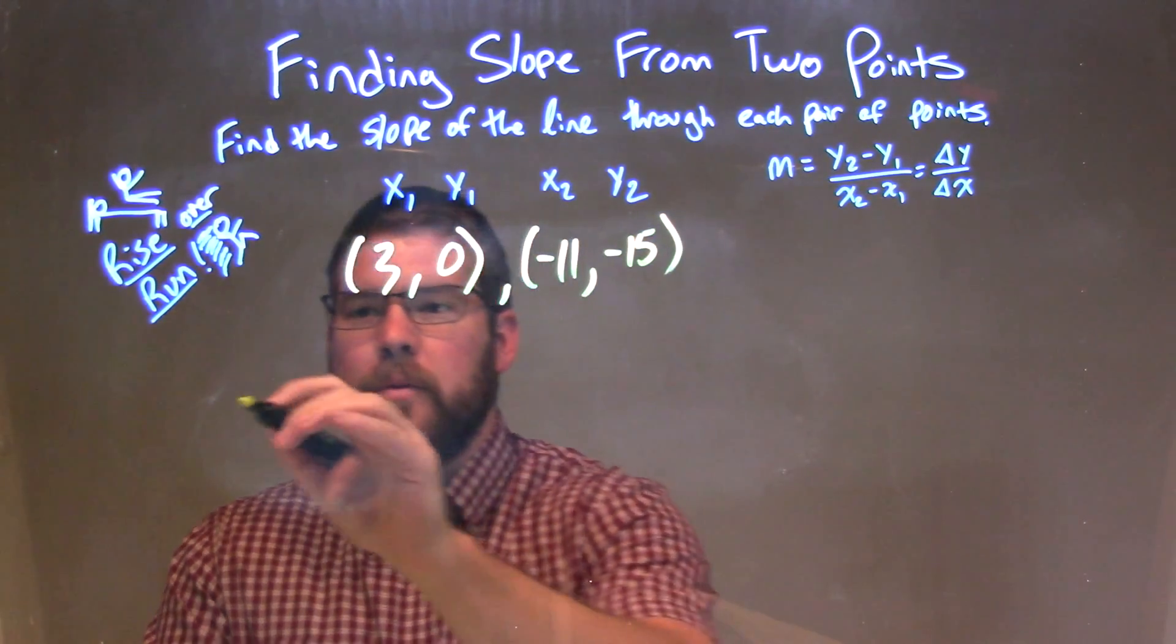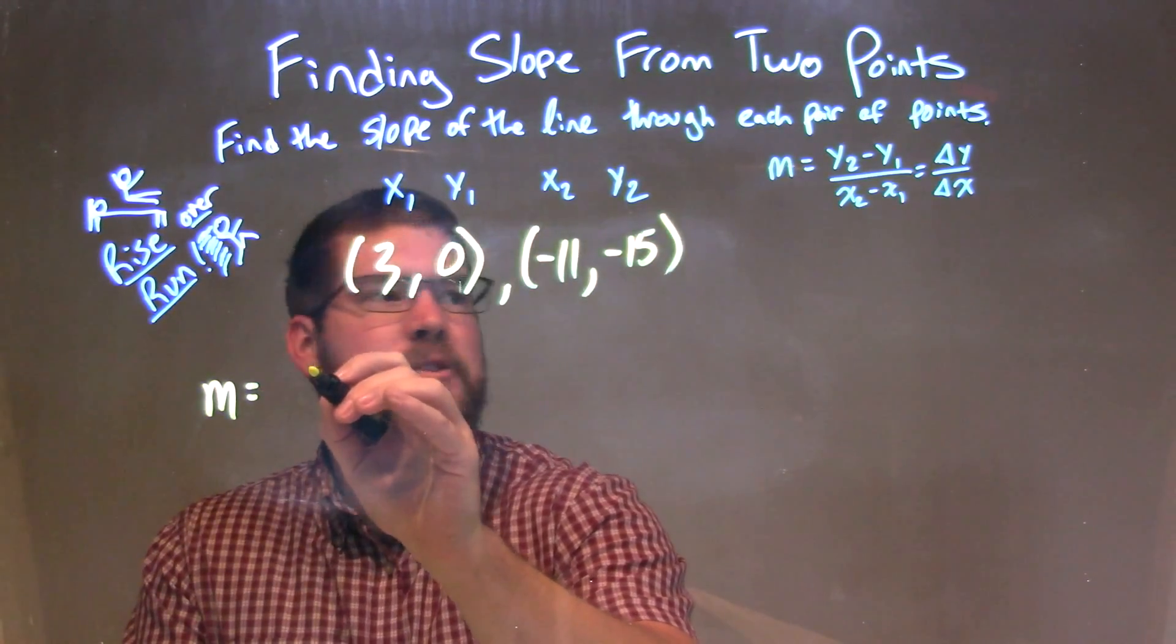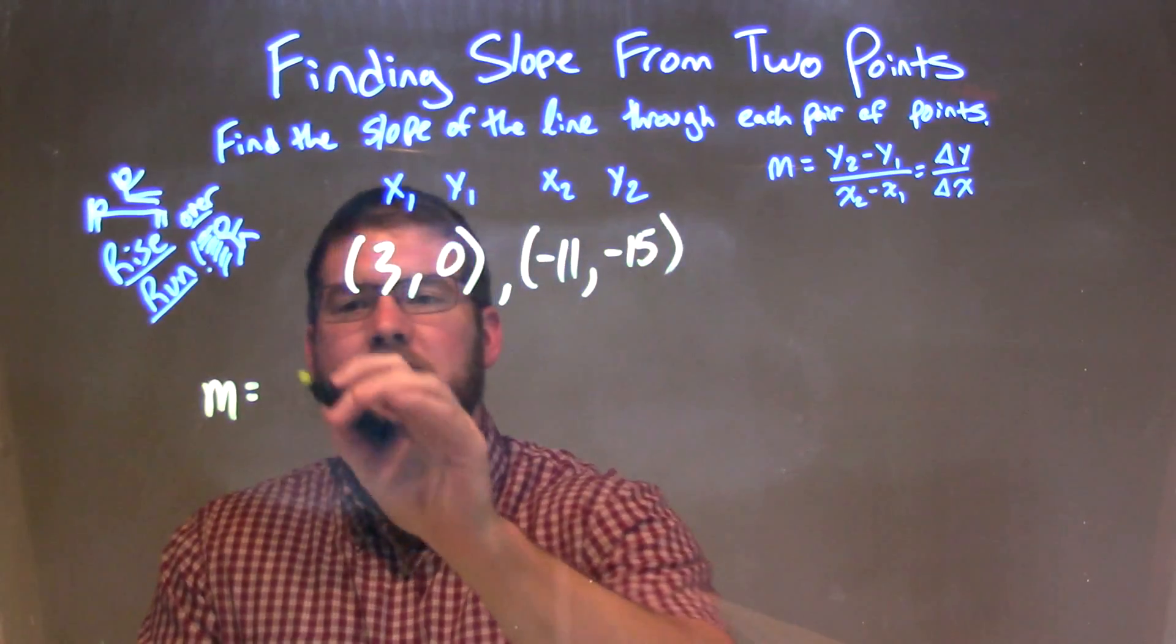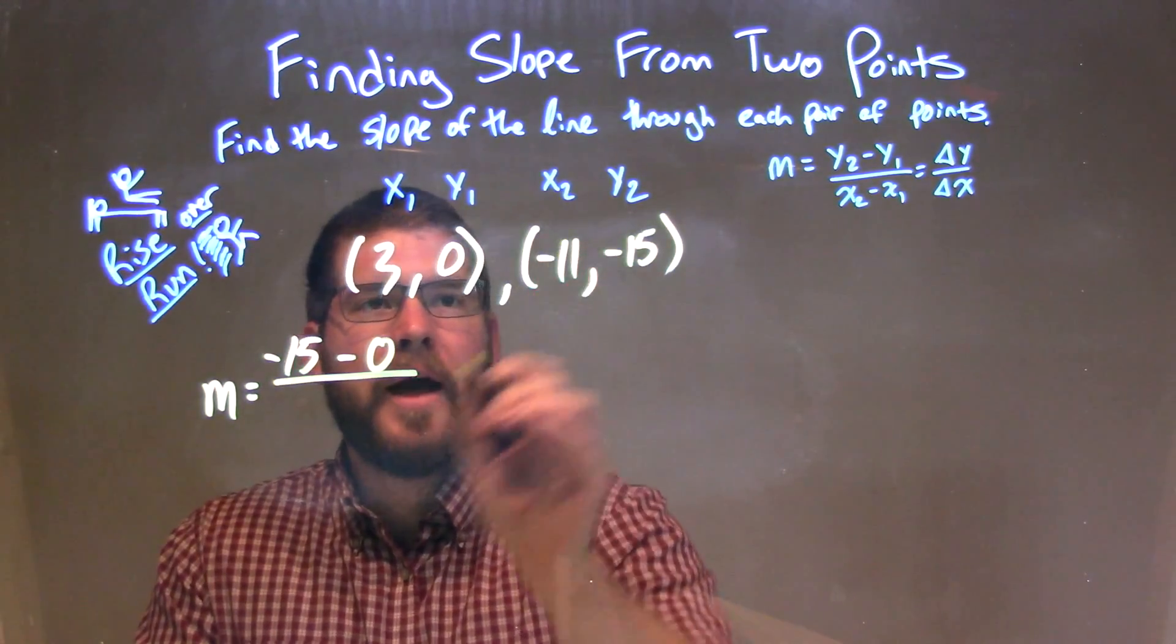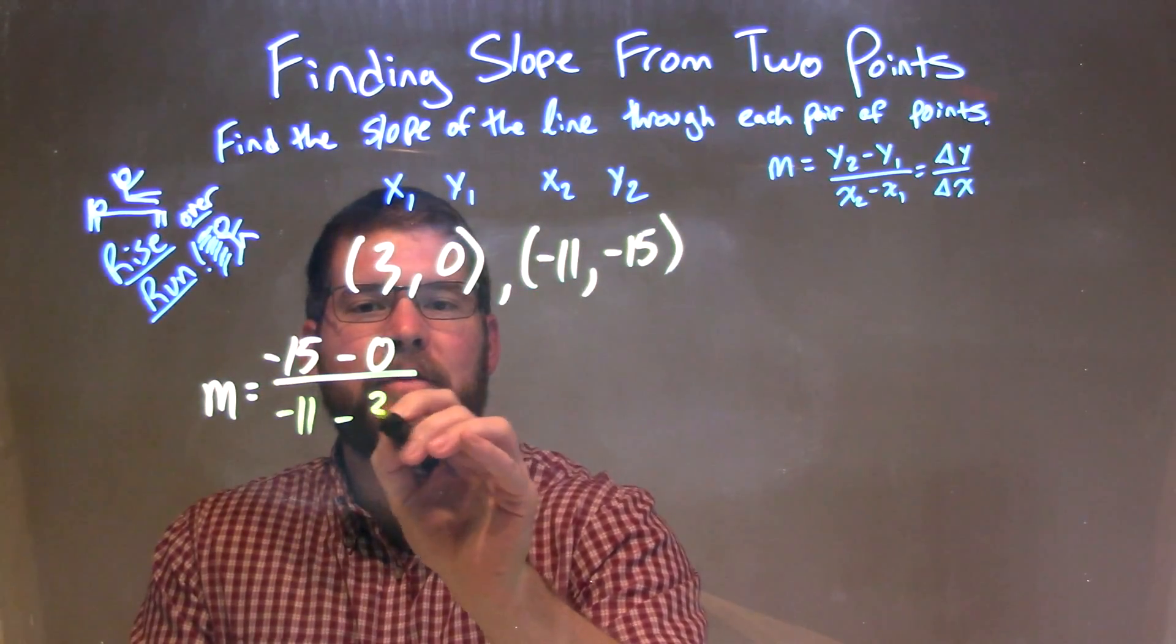Let's follow our slope formula: m equals y2 minus y1 over x2 minus x1.